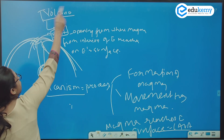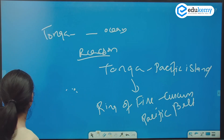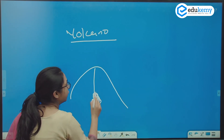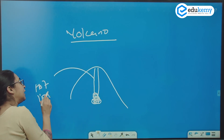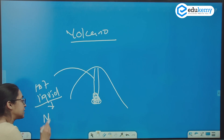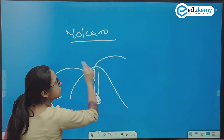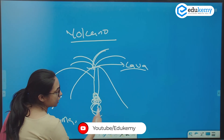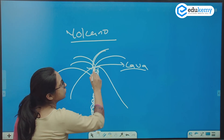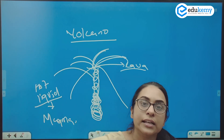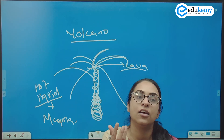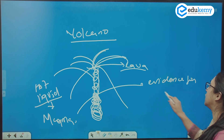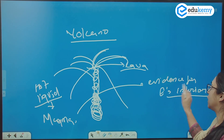Here we are discussing about volcano — what is the vent, what is the volcanism process. The hot liquid within the interior of the earth is called as magma. And when this hot liquid reaches the earth surface, it is called as lava. The magma is coming from the interior of the earth and reaching on the earth surface — don't you think this can serve as evidence of the earth's interior? It can tell us what is the composition of the interior layers of the earth. It serves as evidence for the earth's interior.